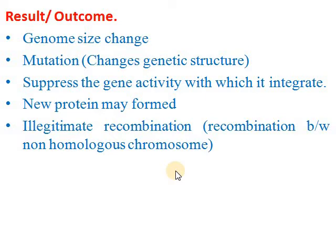When transposons move between non-homologous chromosomes, recombination takes place between non-homologous chromosomes. We call this illegitimate recombination.